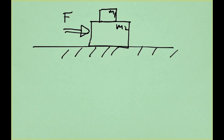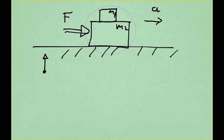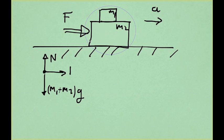Assuming the blocks move together, we define our object of interest as M1 plus M2. Finding the acceleration is straightforward. The free body diagram of the combined object shows only the normal force from the floor, the force of gravity (M1 plus M2) times G, and the applied force F to the right.